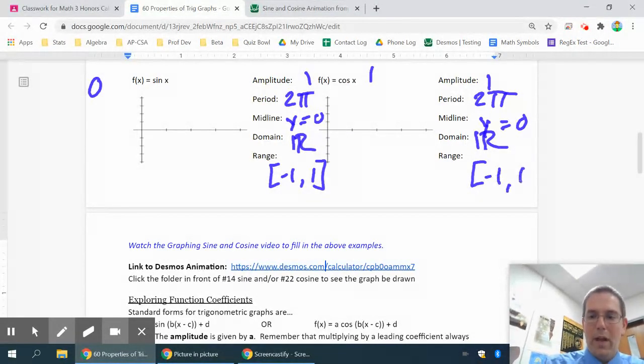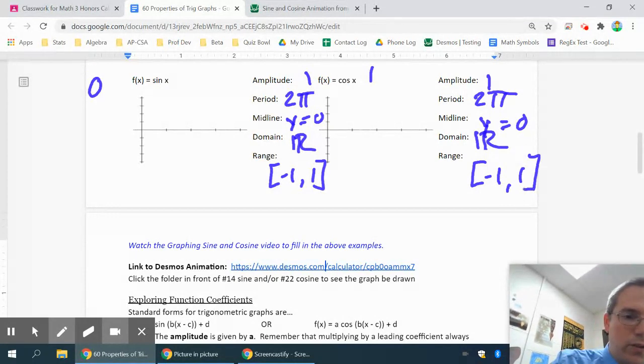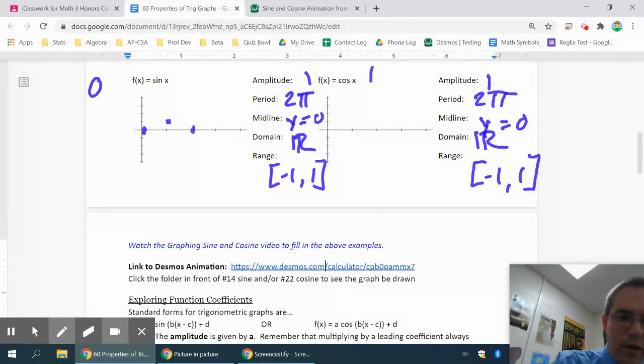The sine graph starts at 0, goes up to 1, back down to 0, down to negative 1, and back to 0. That is your pattern of this graph based on the y coordinates as you move around in that animation we saw.